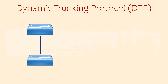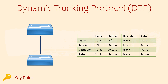Rather than manual configuration, we can configure the link as dynamic. There are two types of dynamic configuration called auto and desirable. The results depend on what we configure at each end of the link. With the desirable option, the switch actively tries to make the link a trunk. This will succeed if the other end is also configured as desirable, auto, or trunk.